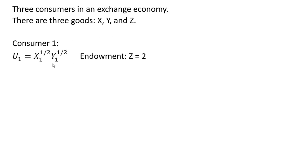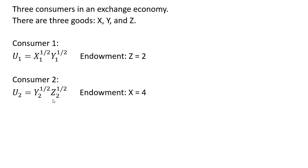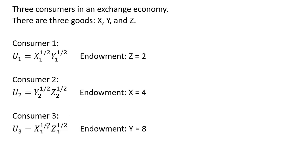Here's consumer one's utility function. Consumer one has an endowment of good z that equals 2. Here's consumer two's utility function, and consumer two has an endowment of good x equal to 4. And finally, consumer three's utility function, and consumer three has an endowment of good y that equals 8.